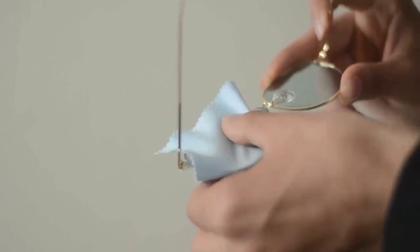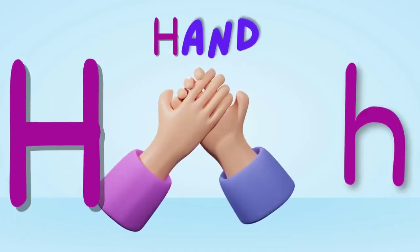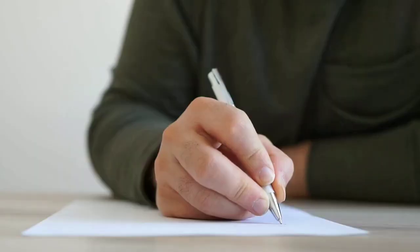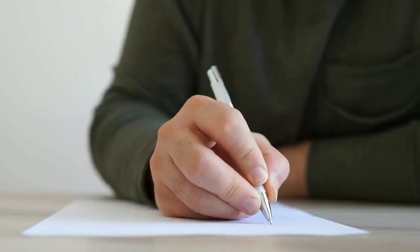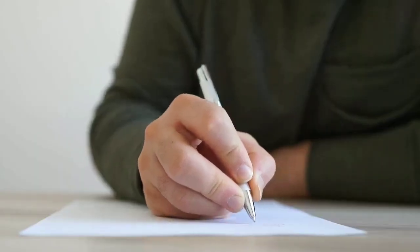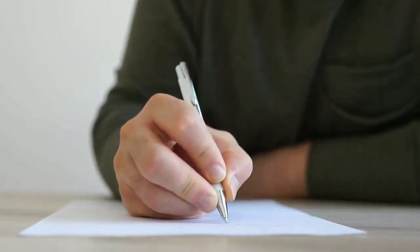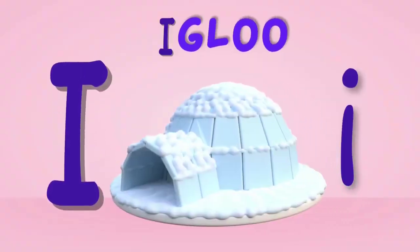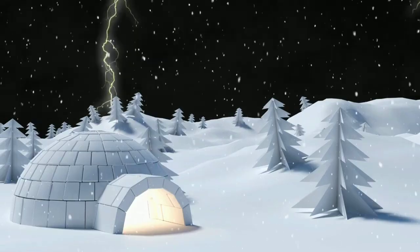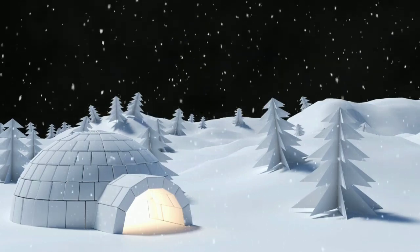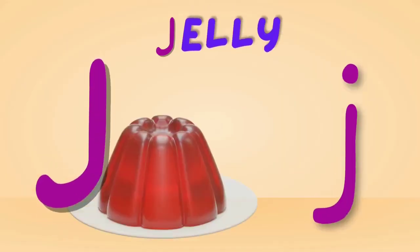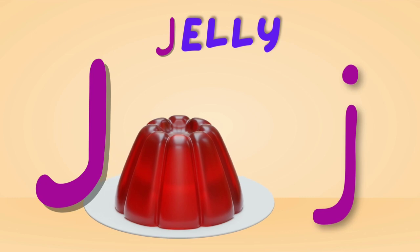H is for hand. Hand, hand — this is the hand. I is for igloo. Igloo, igloo — this is an igloo.